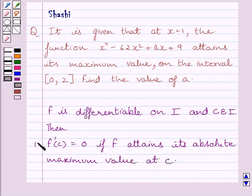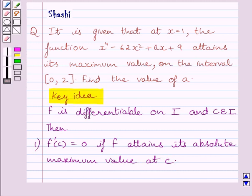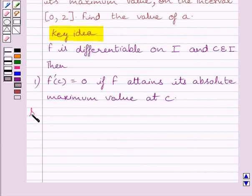This is the key idea to solve the given question. Now let us start the solution. Let function f be given by f(x) equal to x raised to the power 4 minus 62x square plus ax plus 9.